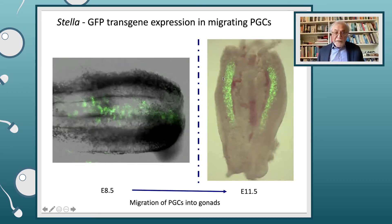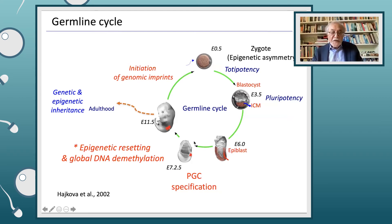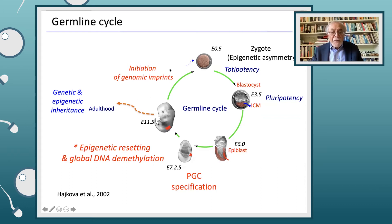We also started to look at other aspects of germ cell biology. The germ cells are formed at day 7.25 — this is the cluster. They start migrating, and during this migration they go through a very critical epigenetic resetting process, which is absolutely crucial for the eventual totipotent state. Petra Heikova was one of the key people who started this work in my lab. As the gametes form, this initiation of genomic imprinting, which I had worked on before, eventually gives you a zygote and totipotency. So we were starting to understand quite a lot about mammalian germline biology.